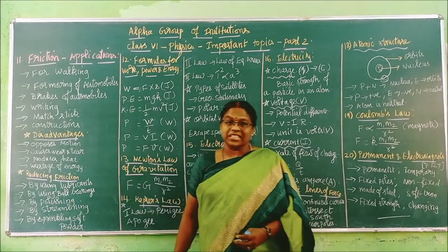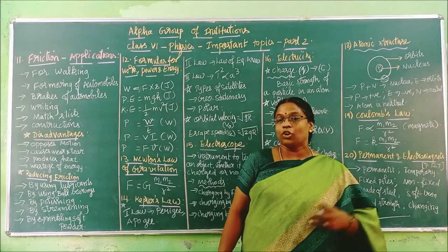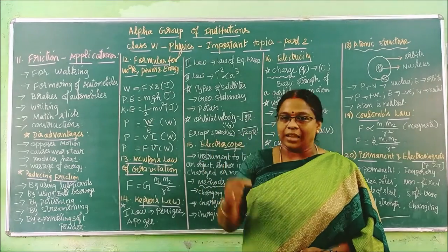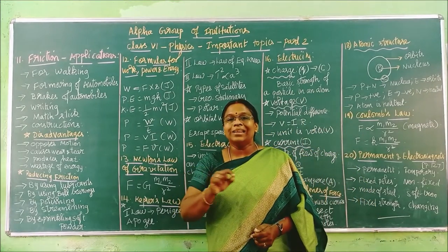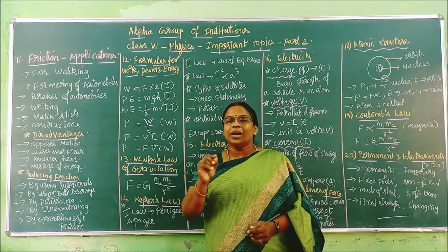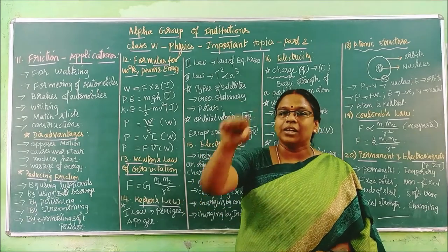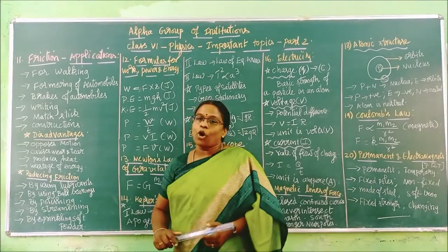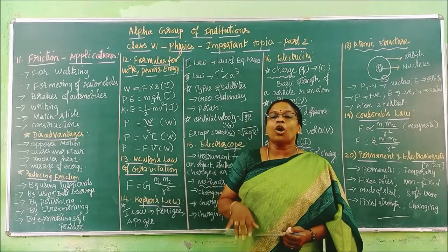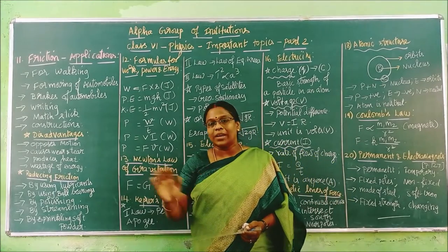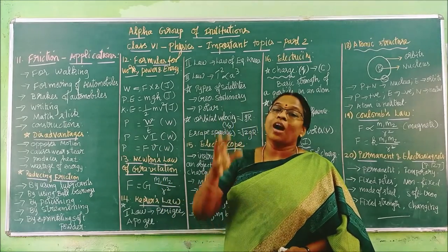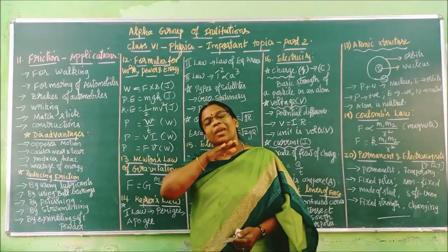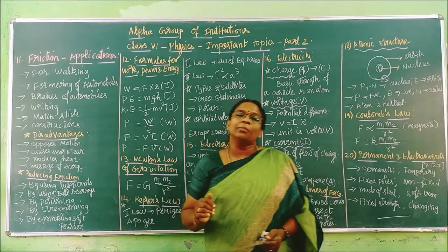Next, by using ball bearings. In cycles, small balls near the pedalling pad reduce friction between the pedalling pad and the other parts. Next, by polishing. Friction always happens due to irregularities — roughness leads to friction. By polishing and making the surface very smooth, friction can be reduced.